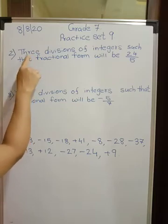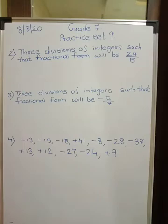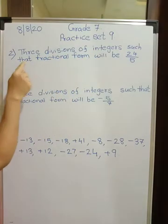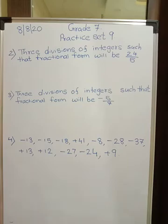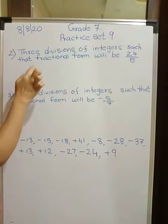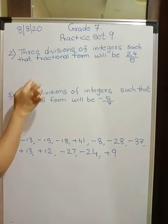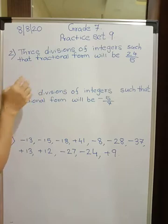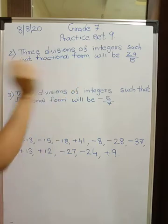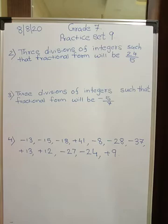It says you have to write 3 divisions of integers such that the fractional form will be 24 upon 5. Now what do you mean by fractional form? You write any division, divisional form numerator upon denominator, such that either after reducing or after doing some operations on it, at the end you will be getting 24 upon 5 as the answer, or in short, you have to write all equal fractions.